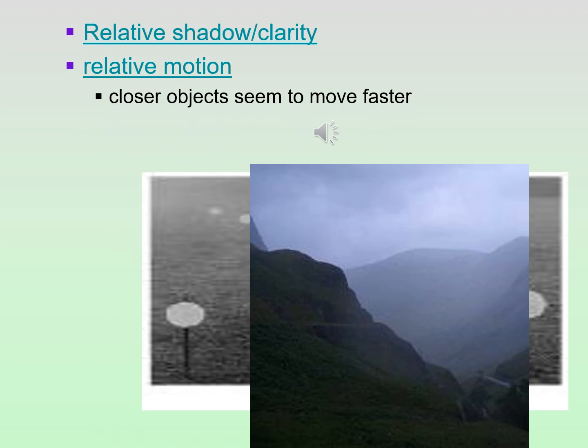Two more monocular cues: relative shadow, also called relative clarity — they mean the same thing. Things that are clear are usually closer; if they're shaded, they're further away, and we can capture that in drawings. You only need one eye to see that. Also, relative motion: things closer to us appear to be moving faster. A car driving past a mountain ridge appears to be going faster than looking down from an airplane coming in for a landing, where things appear to be simply crawling. The further away something is, the slower it appears to be moving.